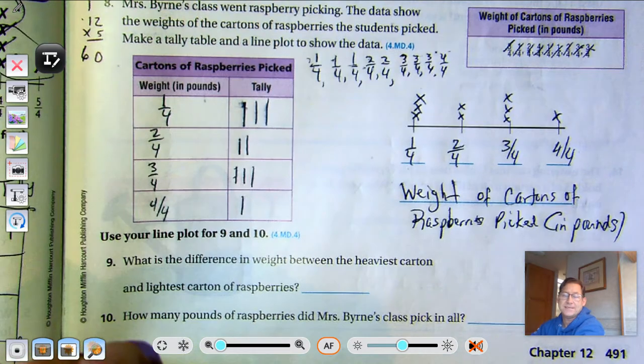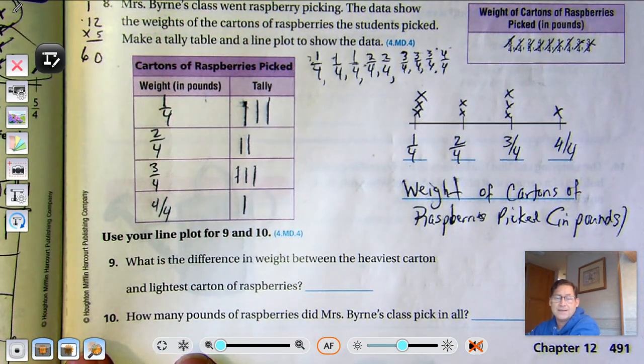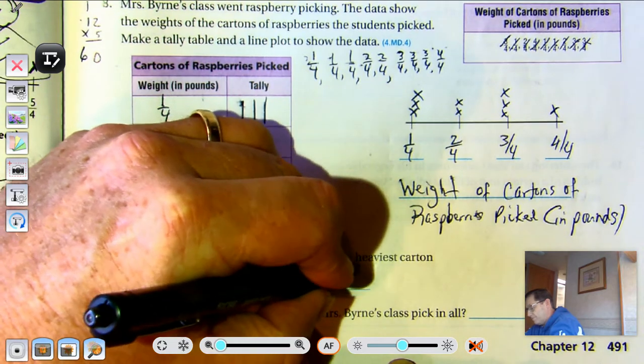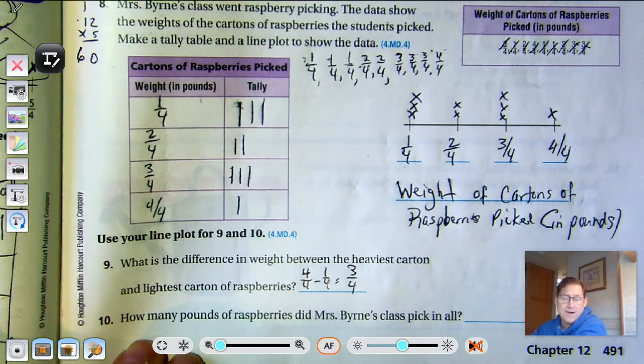Okay, what is the difference between the heaviest carton and the lightest carton? Four-fourths take away one-fourth equals three-fourths pound.